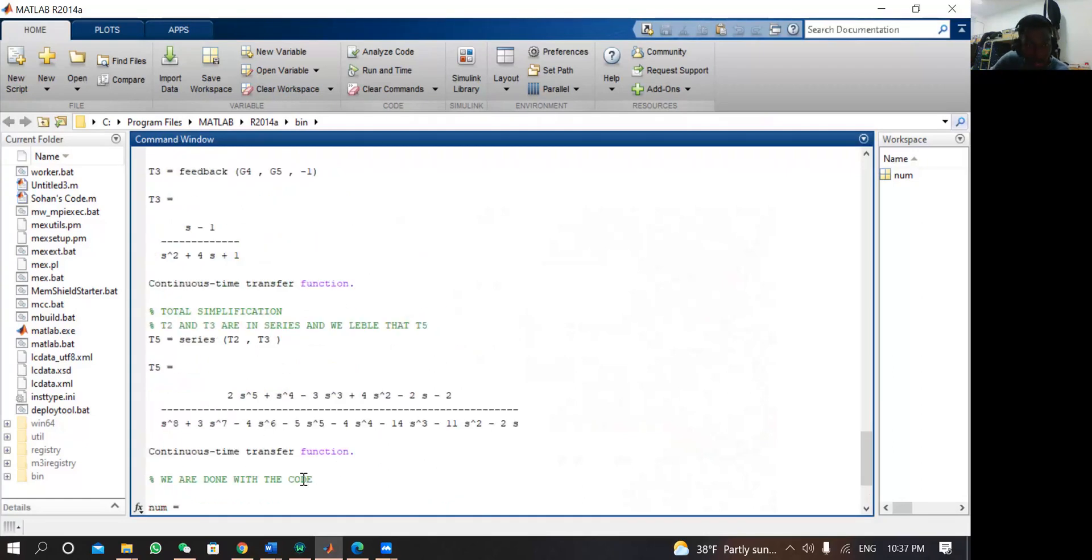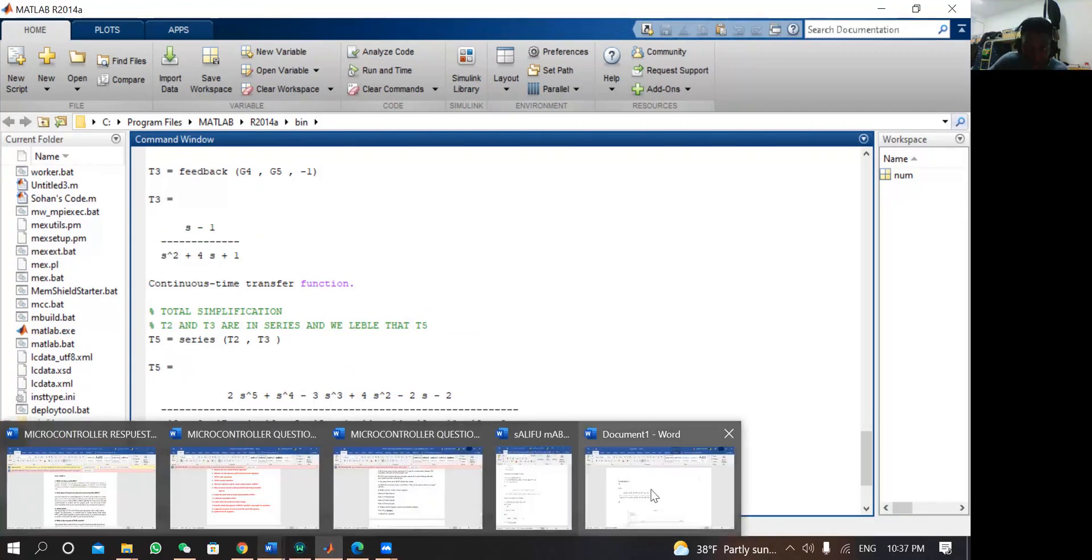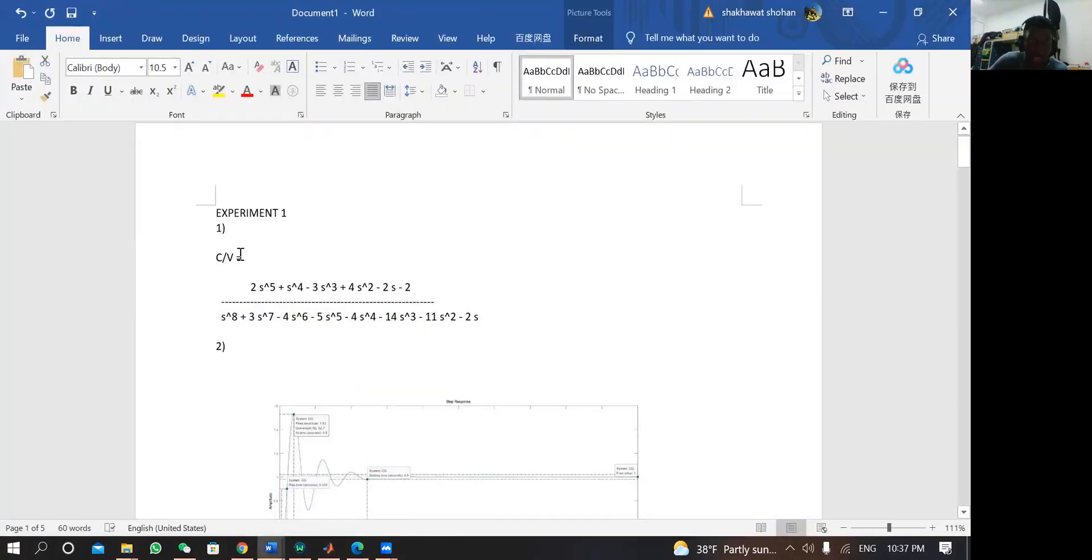We are done with the code. This is question one. To write in the report writing, she says you should only copy the answer. No need to copy the code, only the answer. I made my report to show you how I'm doing it. Question one, experiment one. This is the same one as T5, this is the answer. Thank you very much, we are done with question one. We will continue with question two of experiment one in the next video.